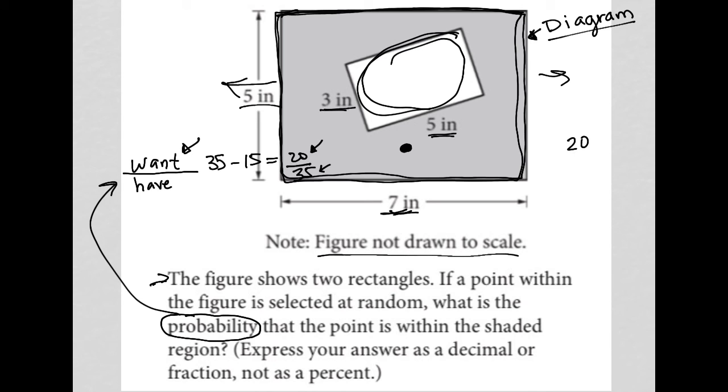So 20 divided by 35 can be simplified. We have a common factor, which is 5. 5 goes into 20 4 times. 5 goes into 35 7 times. So our answer here is 4/7. That's our probability.